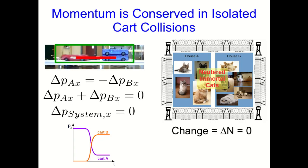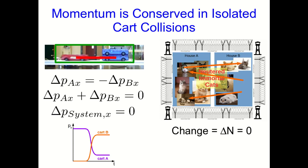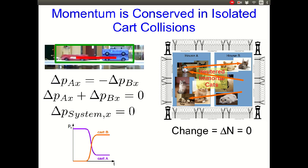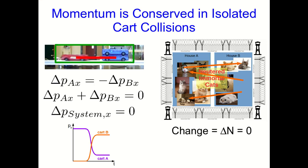The momentums of the individual carts are able to change. To continue the analogy with the cats, it's like the cats can't leave the two houses — they can't leave the system — but they are able to pass from one house to the other. By definition, when a system is isolated, there's no input or output of momentum. We've also seen for the cart collisions that momentum is conserved — it can't be destroyed or created.